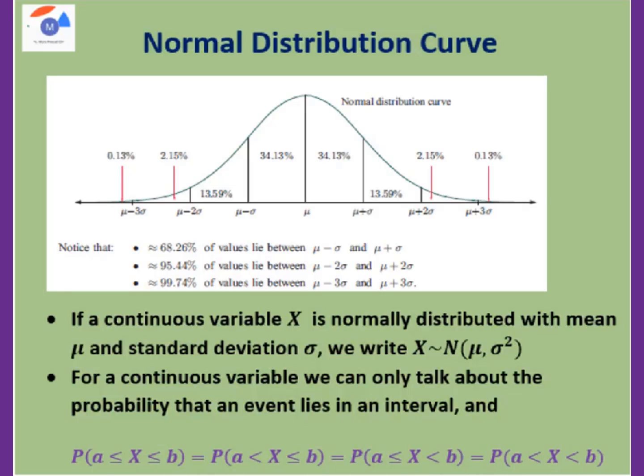This curve we call normal distribution curve. Try to remember those numbers. This is a probability. We have mean. Sigma means standard deviation. So your mean minus 1 sigma, the area will be 34.13%.